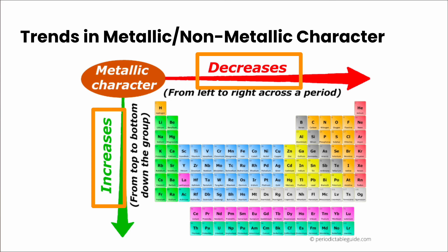Those are our trends for ionization energy, electron affinity, electronegativity, and metallic character. Now let's move on to our next task.